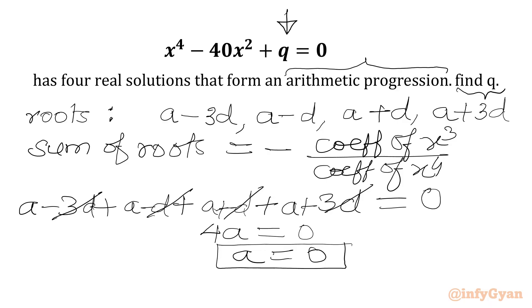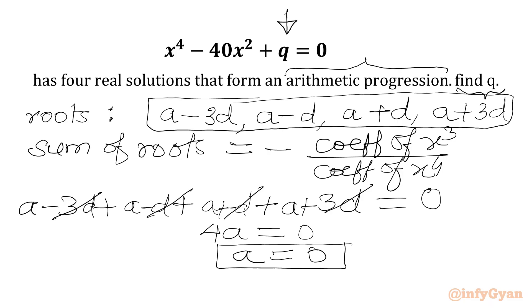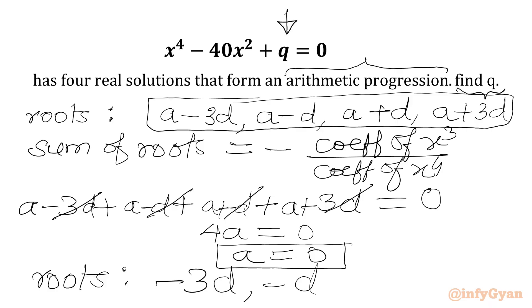Plugging a = 0 back in, the roots of the quartic equation simplify to minus 3d, minus d, d, and 3d.